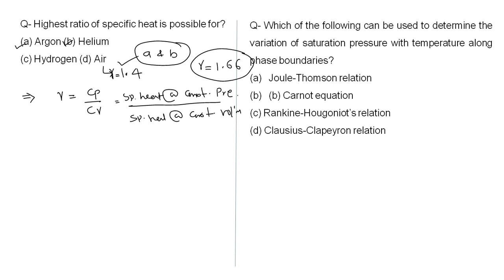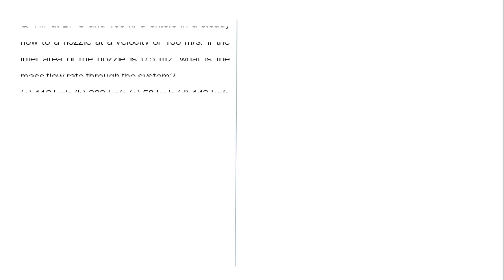Which of the following can be used to determine the variation of saturation pressure with temperature along phase boundaries? The Clausius-Clapeyron relation is used to find saturation pressure with temperature along phase boundaries. This is a fact-based question.